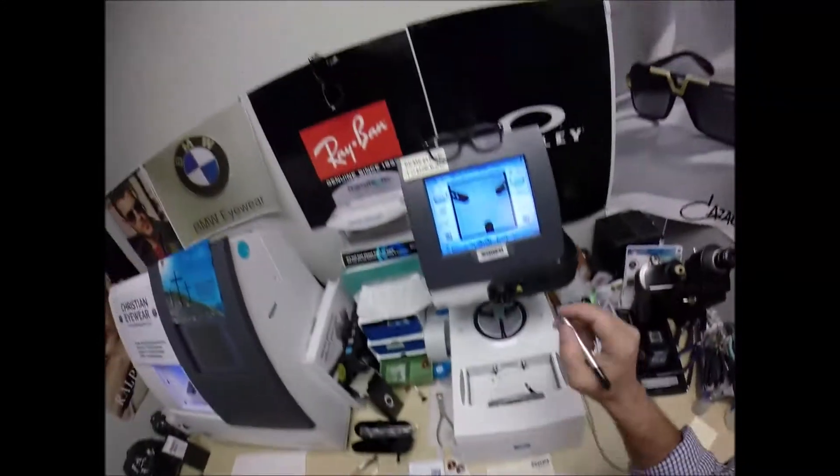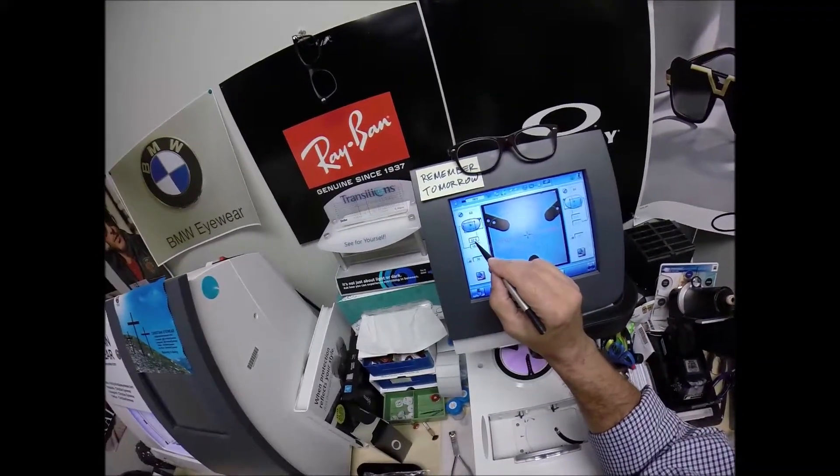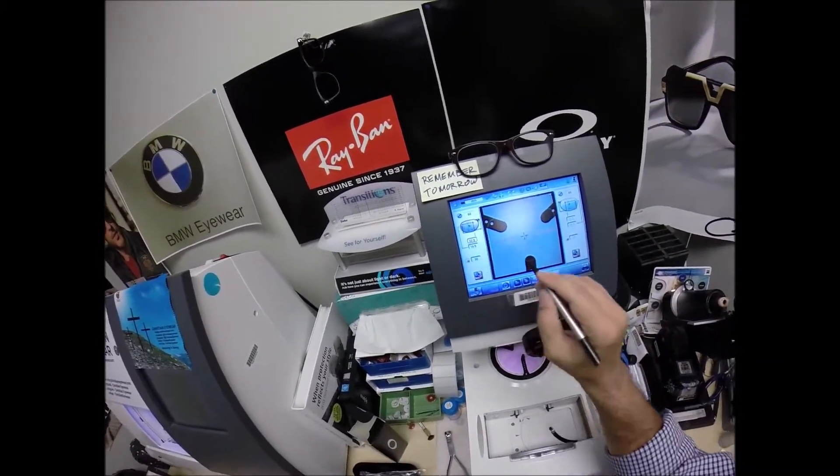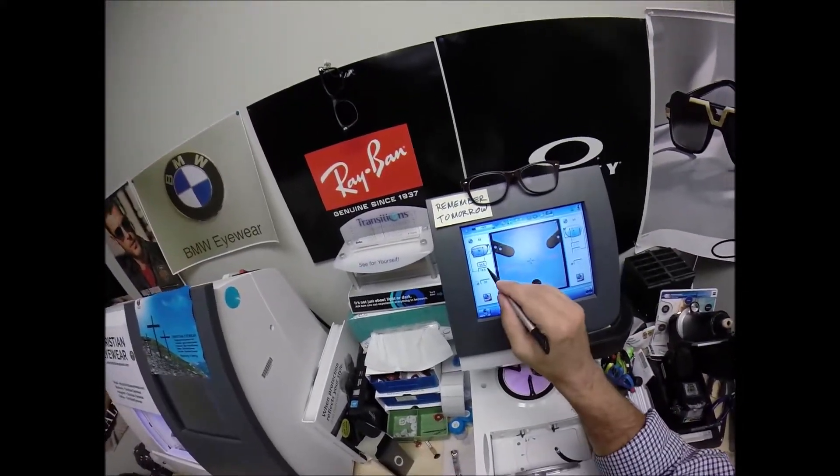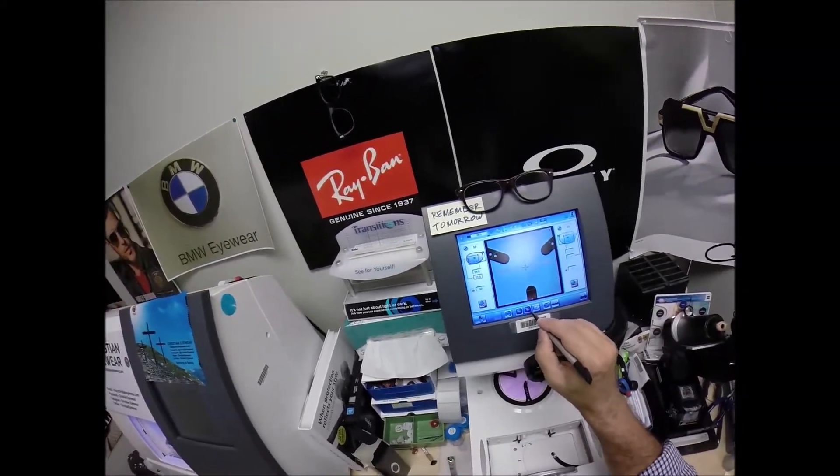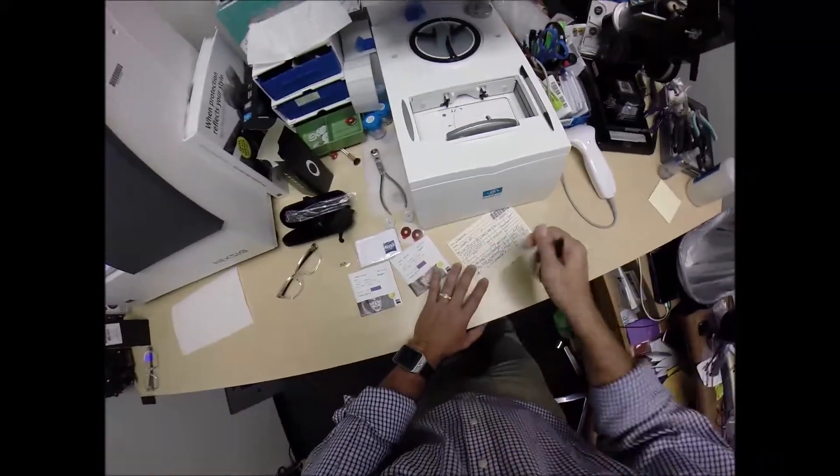I need to enter your pupillary distance of 68. The computer, which divided by 2, is 34. I'm going to tap the plus button until we get to 34. I'm going to raise the optical center height up to 22.